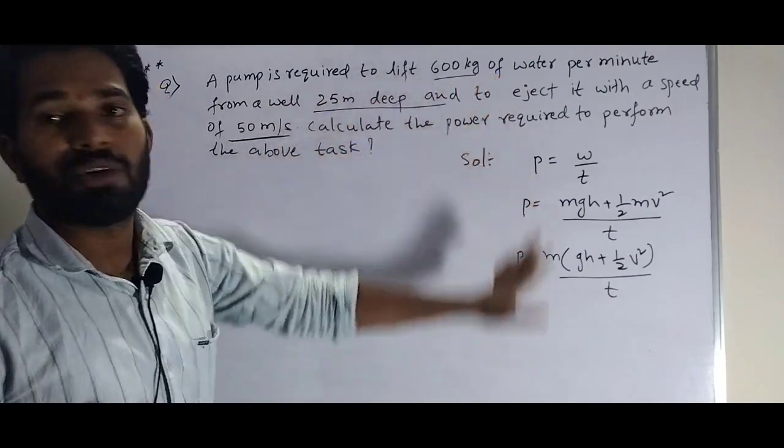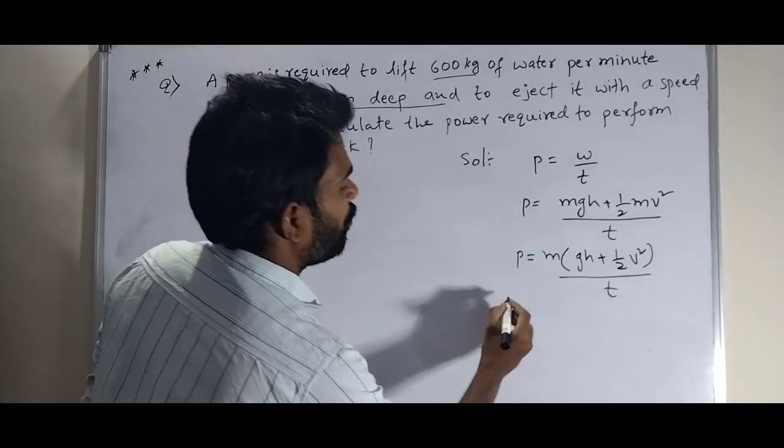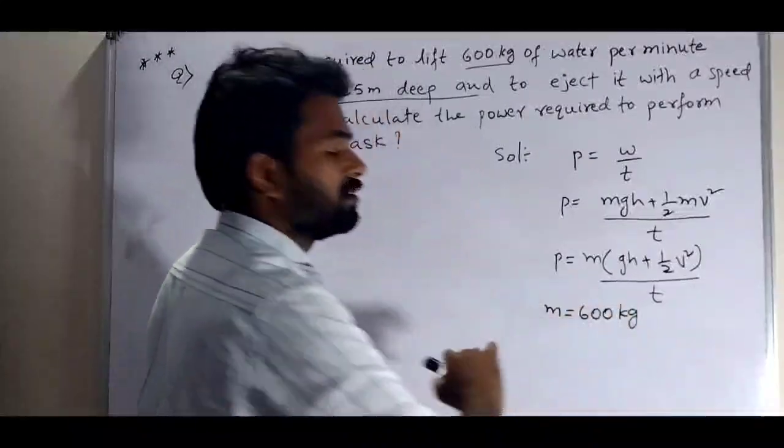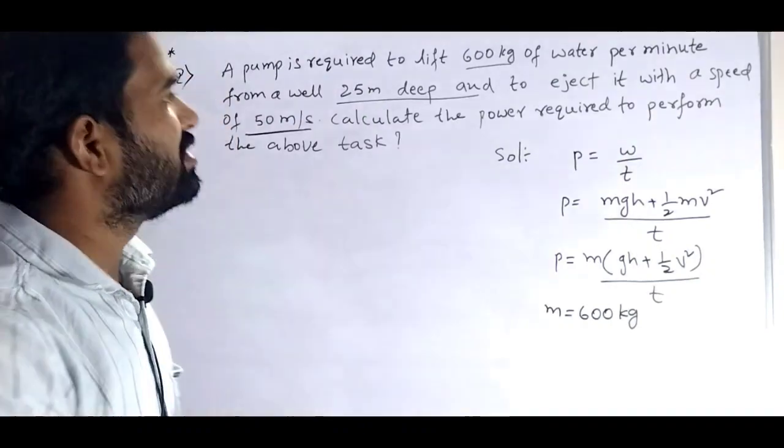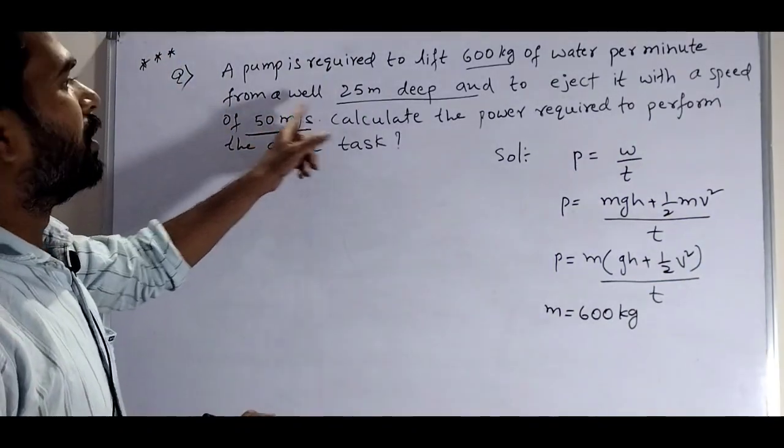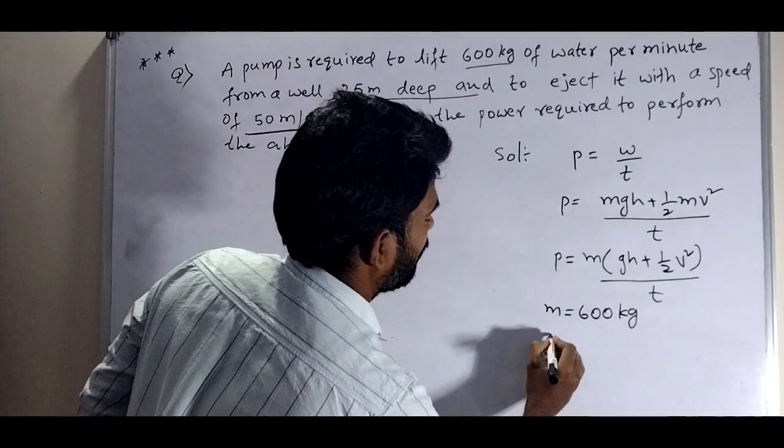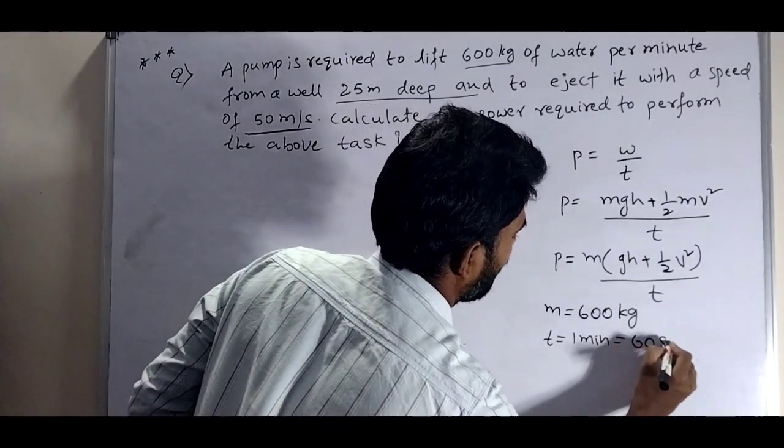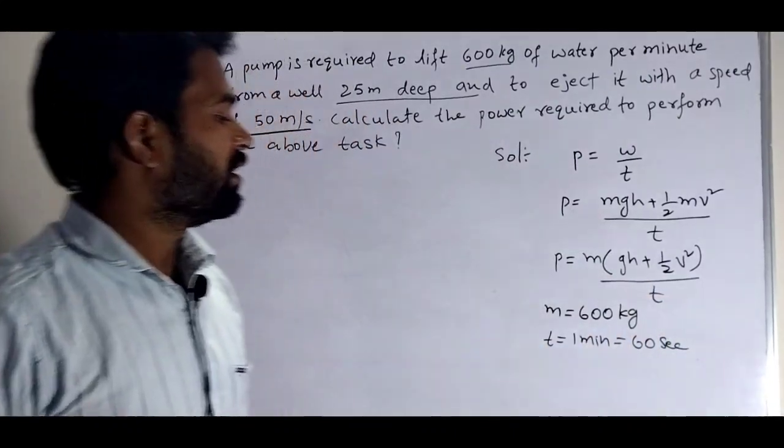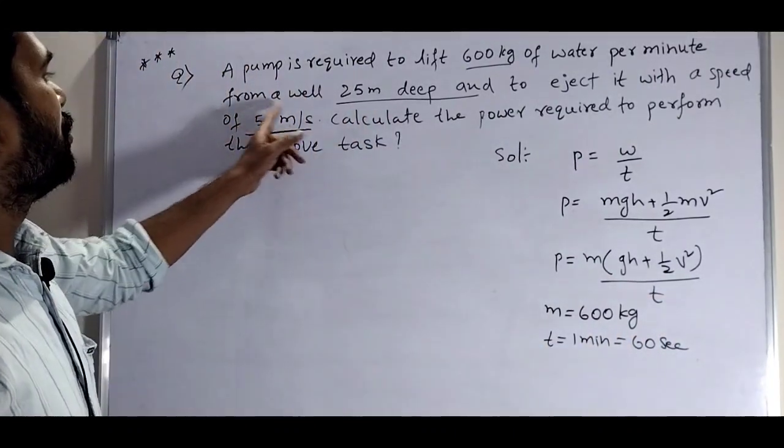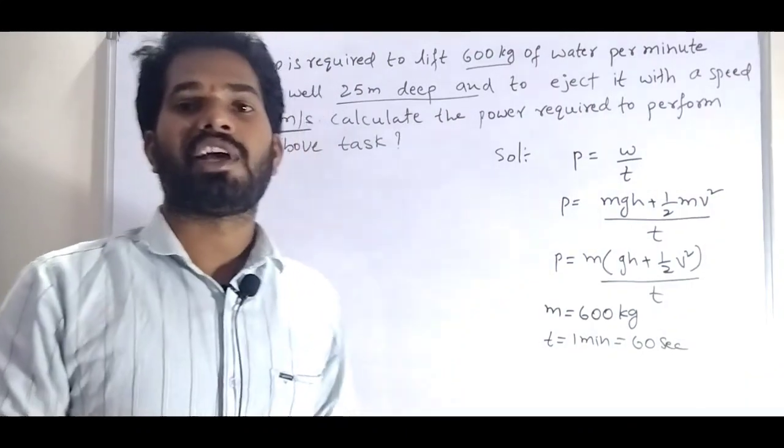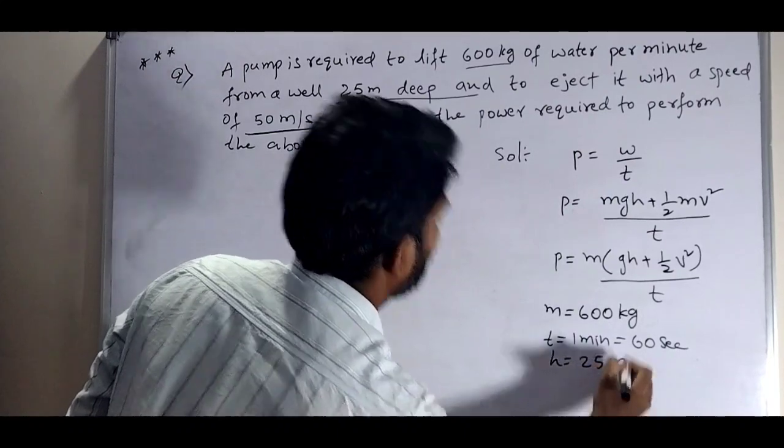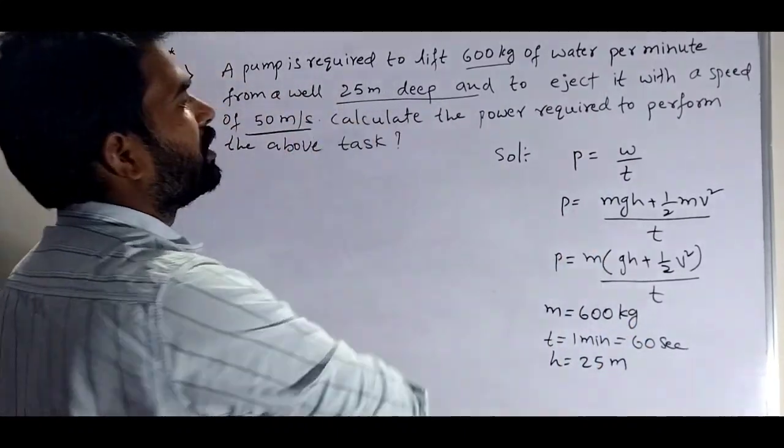A pump is required to lift 600 kg of water. Mass M equals 600 kg. Per minute means time equals 1 minute equals 60 seconds. From a well 25 meters deep, so H equals 25 meters.